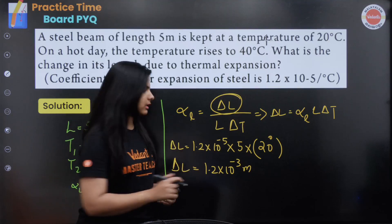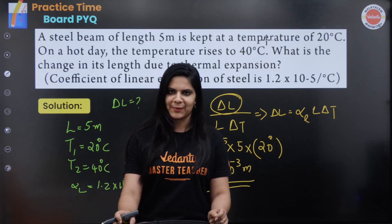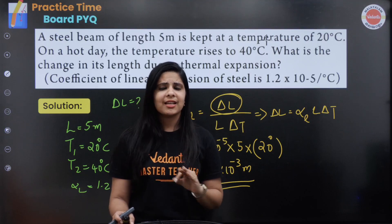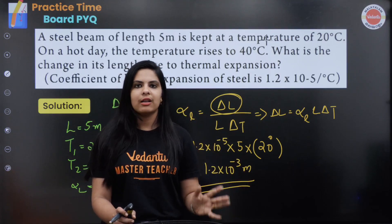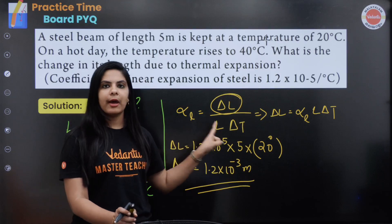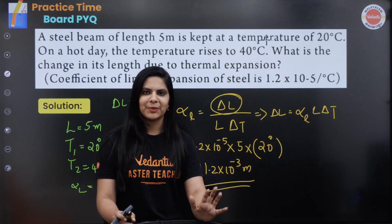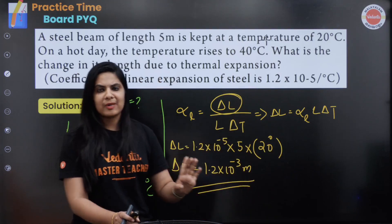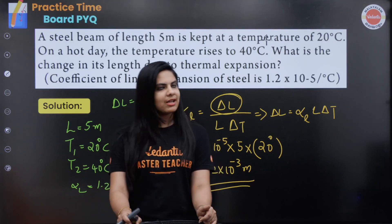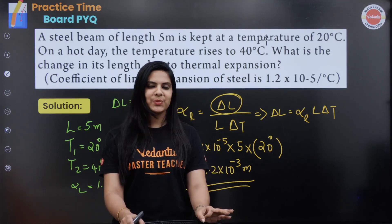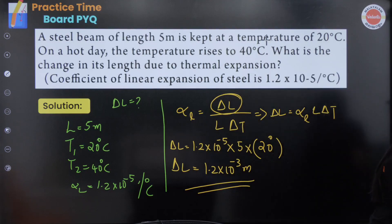1.2 into 10 to the power minus 3 meter. It is very easy. This question is asked repeatedly and it is easy to answer. The coefficient of linear expansion alpha is equal to change in length divided by original length into change in temperature. Please like and share this video, don't forget to subscribe to our channel. Thank you so much and all the best. Stay tuned.